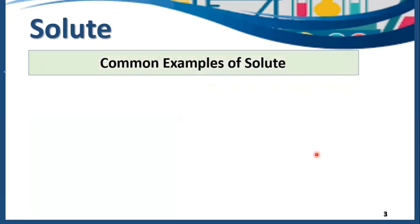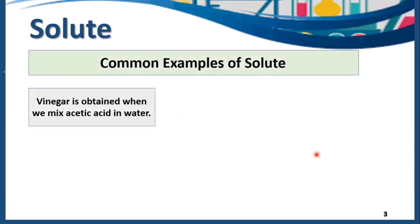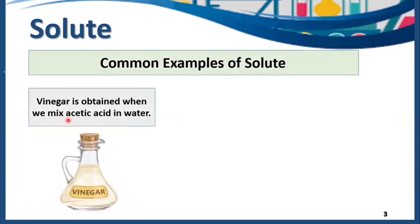Moving on, we have some other common examples of solute. Vinegar is obtained when we mix acetic acid in water. The amount of acetic acid we are using here is very small, and moreover it is dissolving into the water. So that's why it is a solute here.